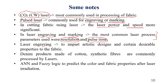Engraving is basically used to impart artistic designs and certain desirable properties to the fabric. In general, denim products of cotton and some products of synthetic fibers are commonly processed by lasers. People are now using artificial neural networks, fuzzy logic, and AI-based techniques to predict the color and fabric properties during laser irradiation. This is an emerging area where AI techniques can be applied to predict color and a variety of features during laser-based processing.